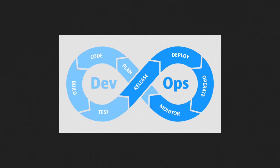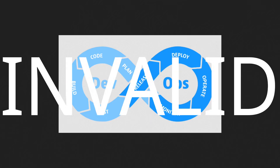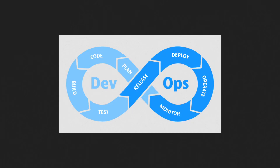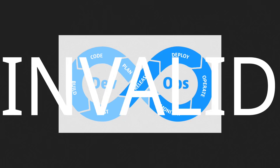Let's go over some examples of organizations that have successfully set up a DevOps pipeline. Netflix has implemented a highly automated DevOps pipeline which allows them to release code updates to their streaming platform multiple times per day. They used a variety of tools including AWS, Netflix OSS — a set of open source tooling for building and deploying cloud-based applications — and Spinnaker, an open source continuous deployment platform.